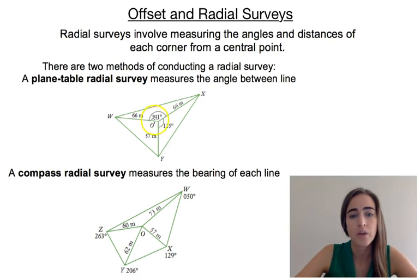And that involves us measuring the angles between each line. So if we set up in the middle of the field over here, we're going to measure it 66 metres out to this corner. And then it's 141 degrees between the angle to that corner and the angle to that corner X. And then we've got 125 here between this line and this line. And from that we could calculate that third angle between these two lines.